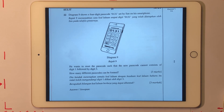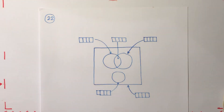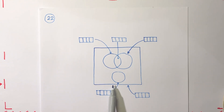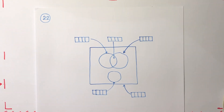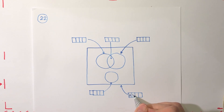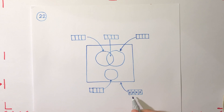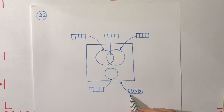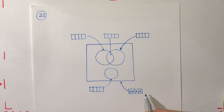Question 22 is about a phone passcode. We have to work out the number of four-digit number combinations which does not contain 1 followed by 3. To solve this problem, let's look at a Venn diagram. First, we consider all possible four-digit numbers, represented as X X X X, where X can be any digit from 0 to 9. Since each digit can be one of 10 possible values, the total number of combinations is 10 to the power of 4, which is 10,000.